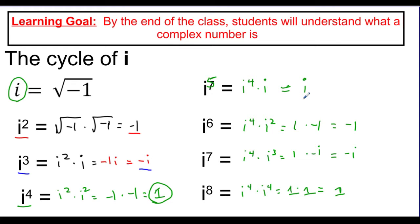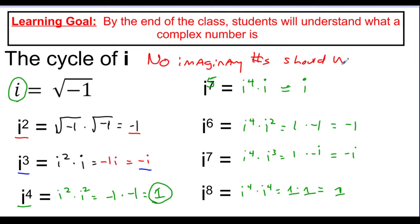Here's how we can simplify any of these exponent problems. Every time I worked through i squared up to i to the eighth, I ended up with no exponent remaining. So the general rule is: no imaginary number with i should be left with an exponent, because we can always simplify it into one of exactly four values — i, negative 1, negative i, or positive 1.